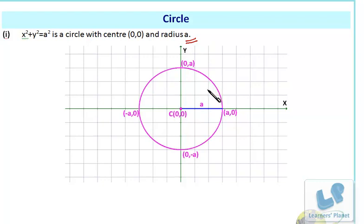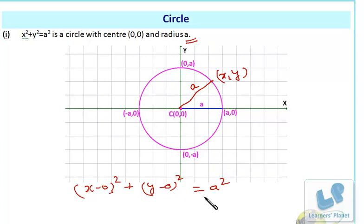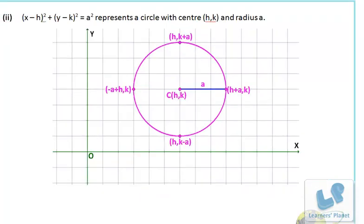We can derive this using the distance formula. For any point (x, y) on the circle, the distance from (x, y) to the center (0, 0) equals a. Applying the distance formula: the square root of (x minus 0) squared plus (y minus 0) squared equals a, which gives x squared plus y squared equals a squared.